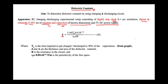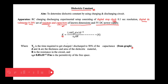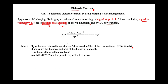tp is the time required to get charged or discharged to 50 percent of the capacitance, which we obtain from the graph. d and A are the thickness and area of the dielectric material. R is the resistance set in the circuit. Epsilon naught is the permittivity of free space, taken as 8.85 × 10 to the power of minus 12.